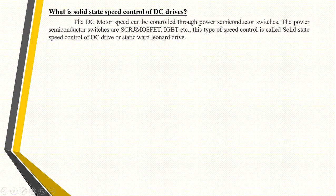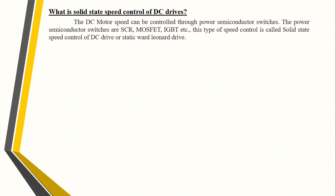The DC motor speed can be controlled through power semiconductor switches. The power semiconductor switches are SCR, MOSFET, IGBT, etc. This type of speed control is called solid-state speed control of DC drives, or static Ward-Leonard drive. SCR stands for silicon-controlled rectifier, MOSFET stands for metal oxide semiconductor field effect transistor, and IGBT stands for insulated gate bipolar transistor. These are all called power semiconductor switches.